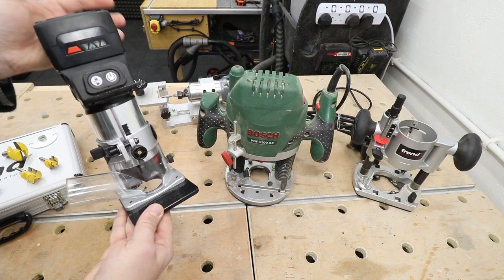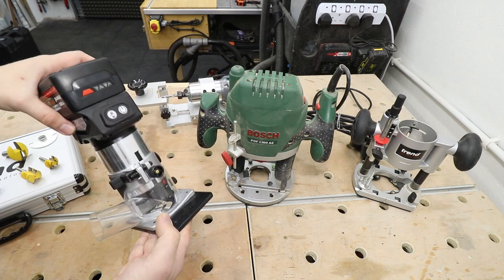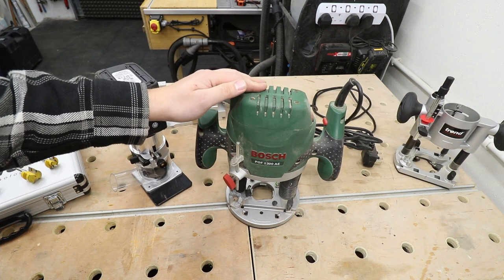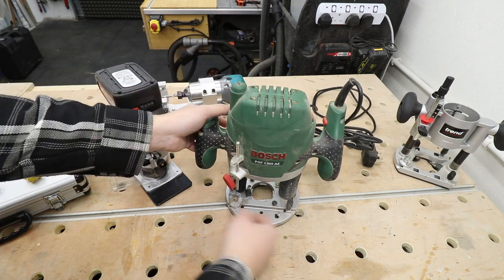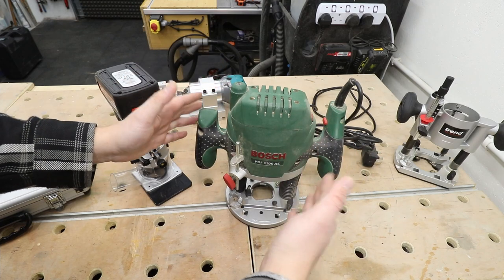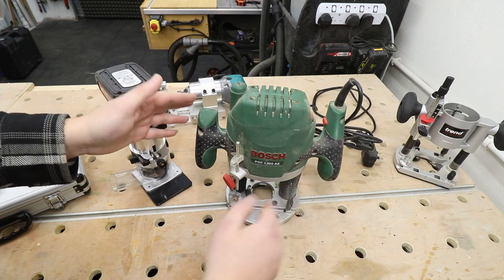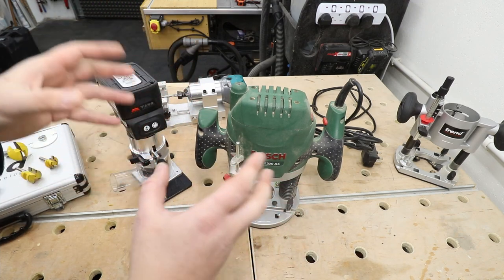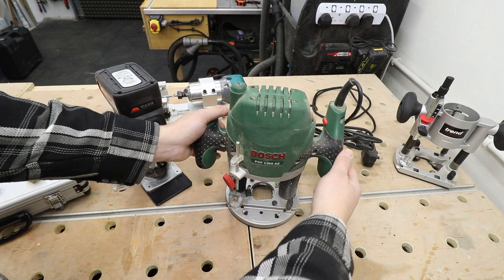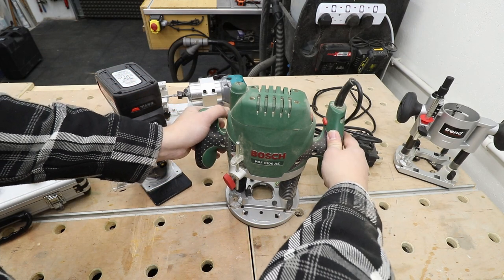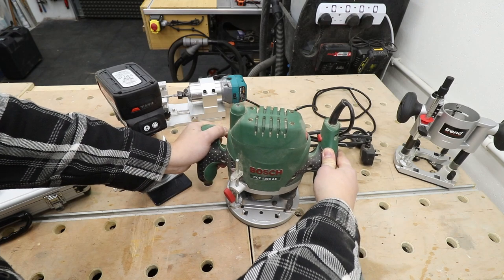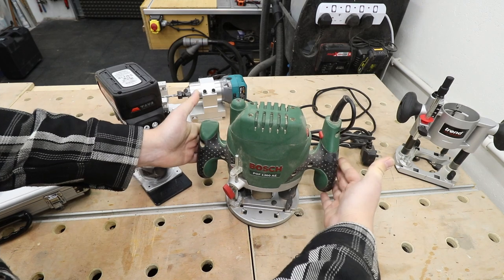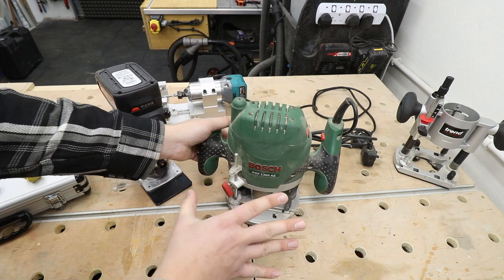They're very flexible and still pack enough power to tackle most jobs. The second type is a plunge router. Usually they're a lot bigger, a lot heavier, and pack a lot more power. They're more suitable for harder tasks and larger cuts. They have this ability to lower themselves down and go up, basically making a plunge cut. Release the lever, lock it in place, and you continue with your cut.